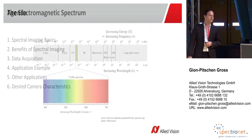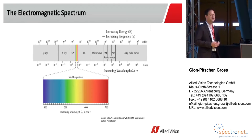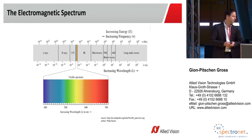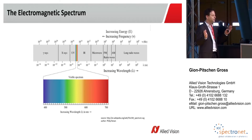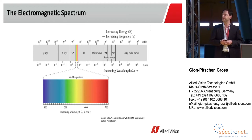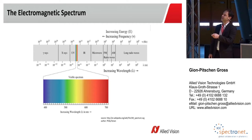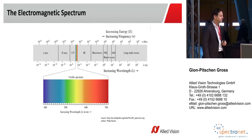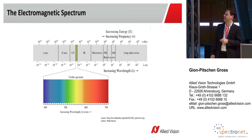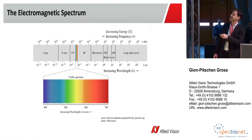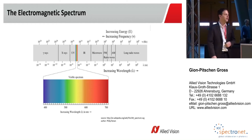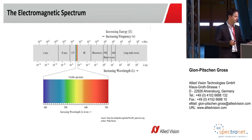The electromagnetic spectrum — we can only see a very small part of it with our human eyes, roughly between 400 and 750 nanometers. On the lower end of the spectrum, it extends into the ultraviolet. On the other end, above the red, it extends into the infrared region of the spectrum. We will hear a bit more about the infrared later on.